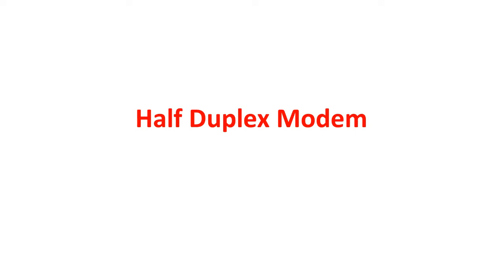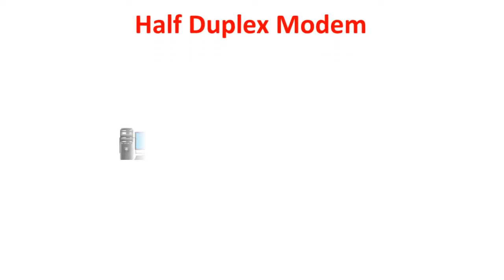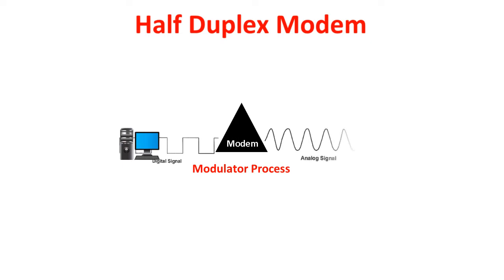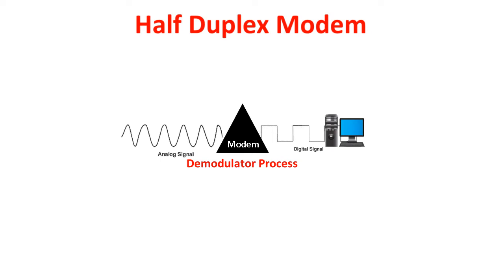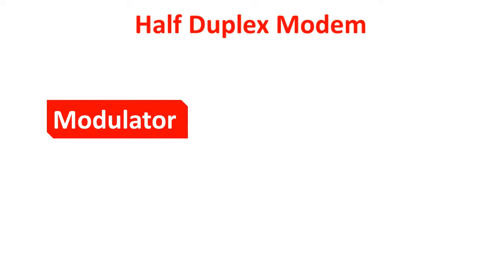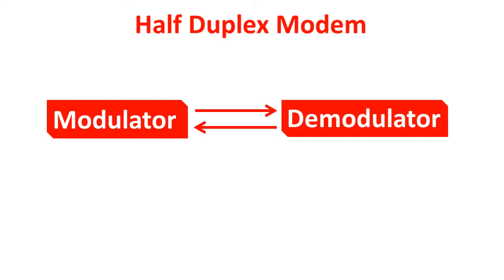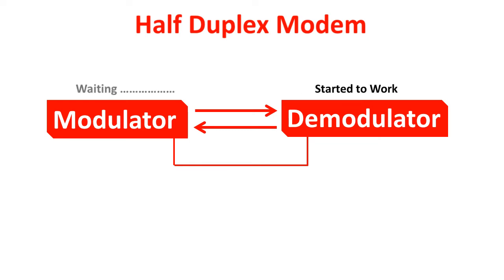A half-duplex modem can transfer data in both directions — from a digital device to a network setup using the modulator process, converting digital data into analog signal, and from the network setup to the digital device using the demodulator mechanism, converting analog signal to digital data. The half-duplex modem can work with both modulator and demodulator and supports two-way conversation, but it performs only one process at a time; the other process will not start unless the current process is fully completed.